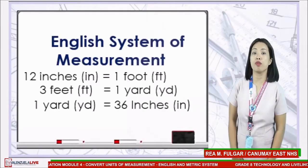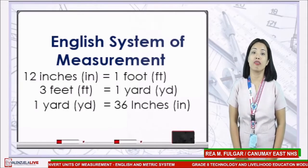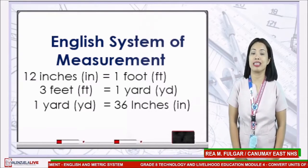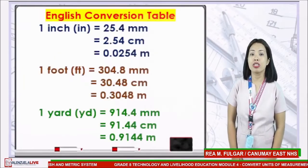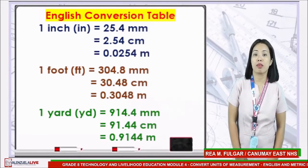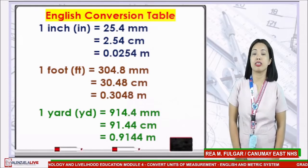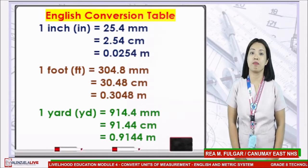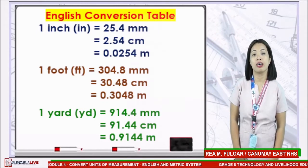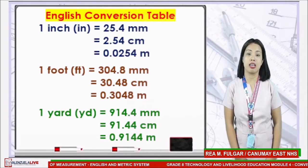In the English system of measurement, we have: 12 inches is equal to 1 foot; 3 feet is equal to 1 yard; and 1 yard is equal to 36 inches. We also have an English conversion table: 1 inch is equal to 25.4 millimeters, 2.54 centimeters, and 0.0254 meters. One foot is equal to 304.8 millimeters, 30.48 centimeters, and 0.3048 meters.